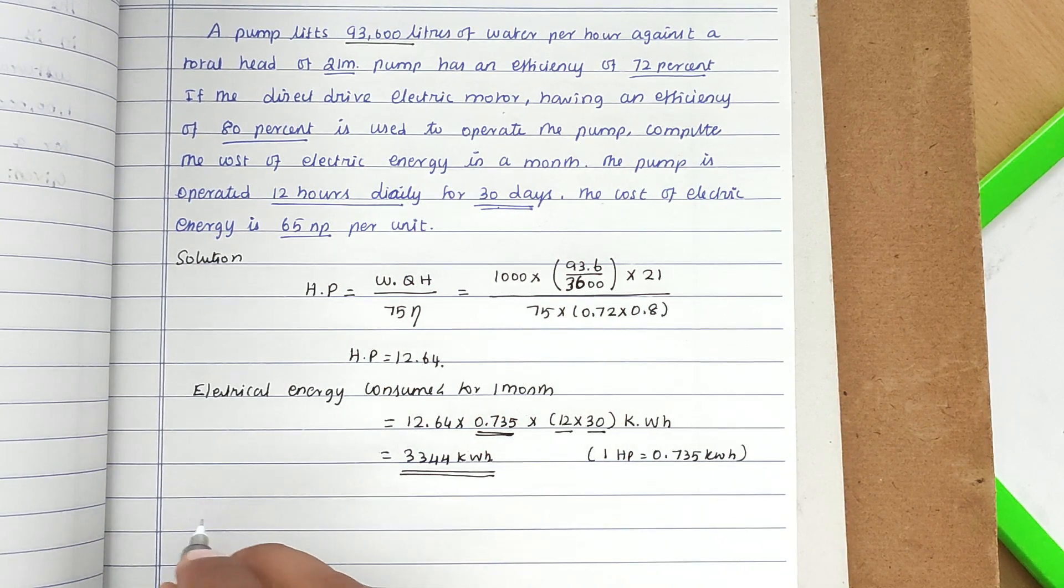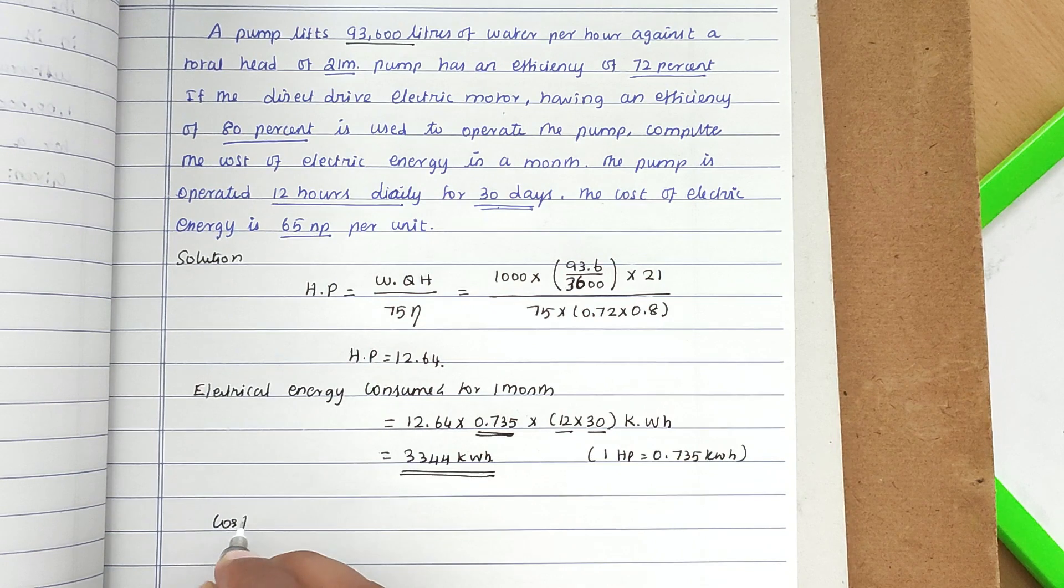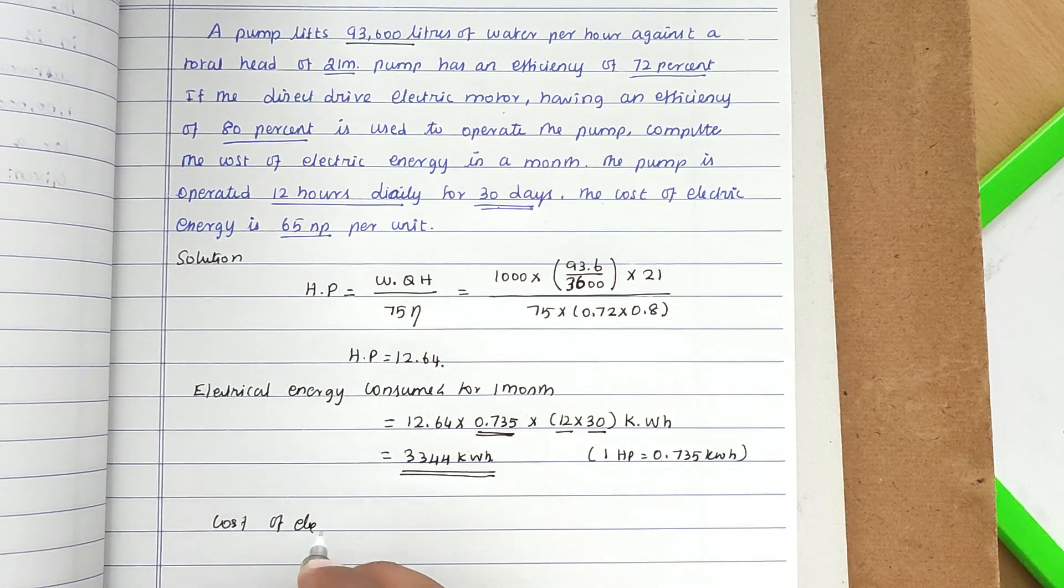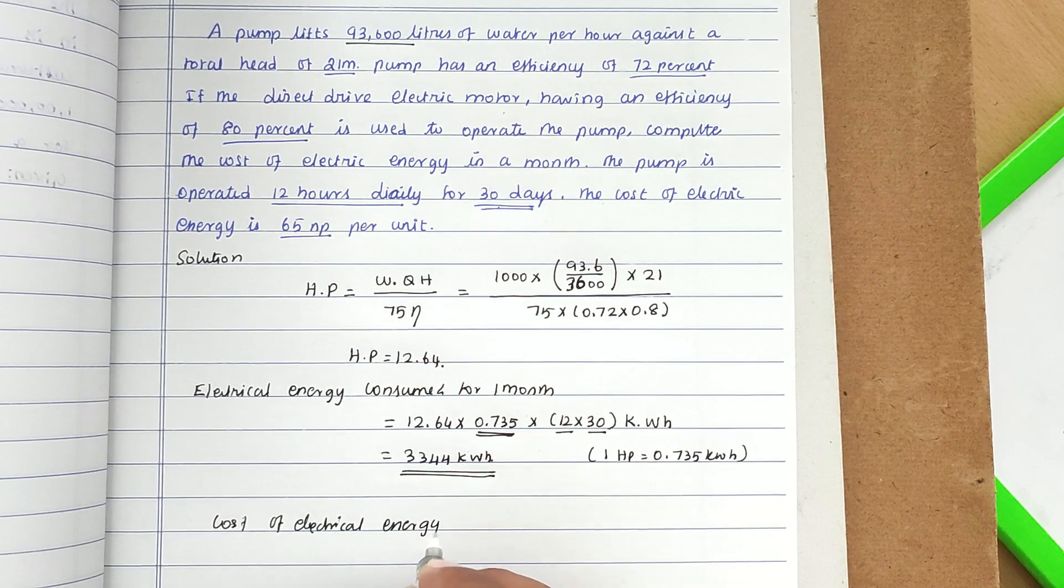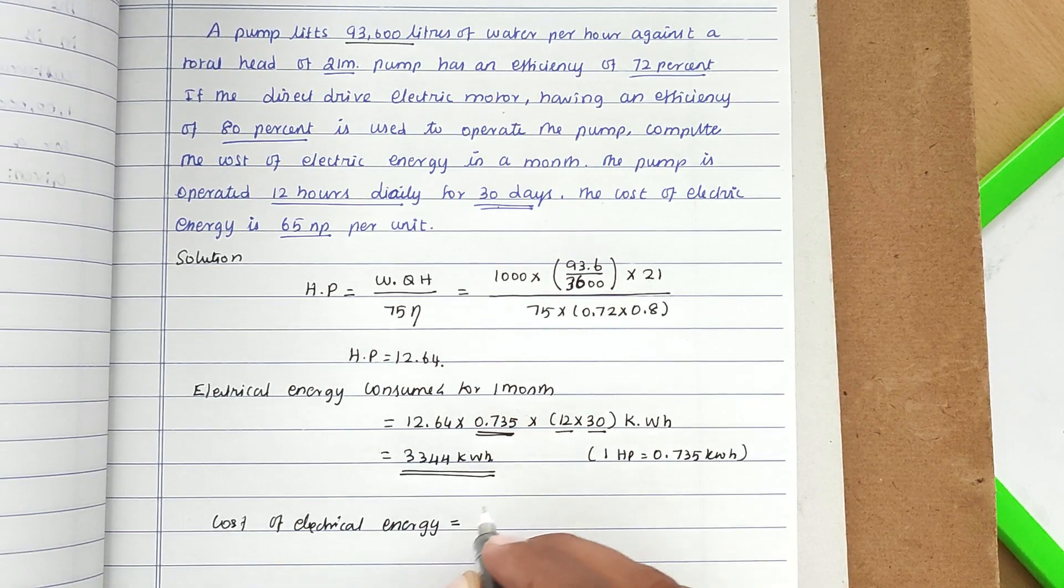Cost of electrical energy per month is rupees 65 paisa, which is 0.65 × 3344 kilowatt.